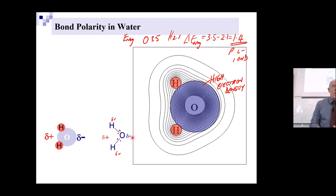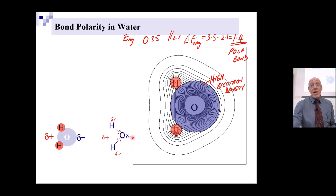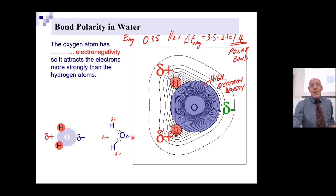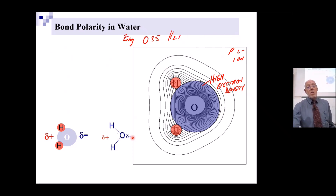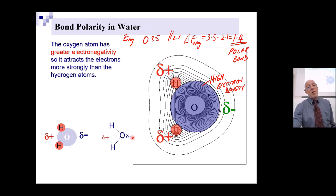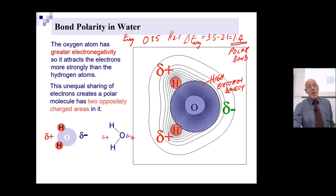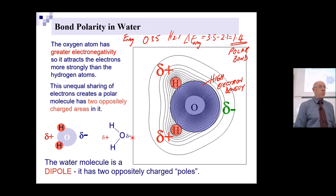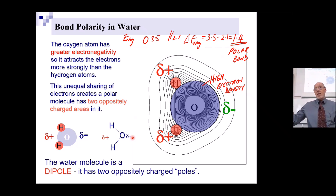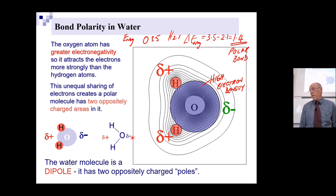So this is a polar bond. The oxygen atom has a bigger electronegativity than hydrogen, so there's unequal sharing which creates a dipole. The water molecule is a dipole — it's charged — and this hugely affects the chemistry of water.